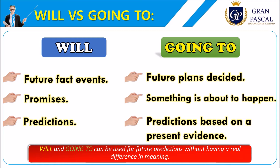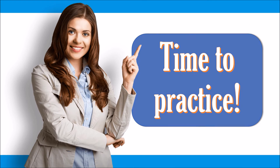Let's check the uses of 'will' and 'going to' applied to a context. We can use 'will' for future facts, events, promises, and predictions. We can use 'going to' for future plans already decided, for something that is about to happen, and for predictions based on present evidence. For example, when you notice the weather is cloudy you can predict: 'It's going to rain later.'